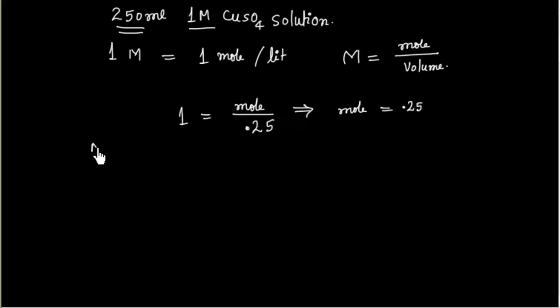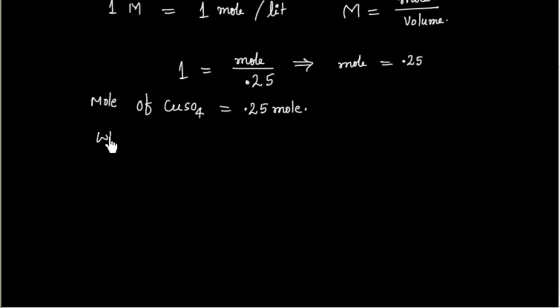Now this is mole of CuSO4 because CuSO4 in this case is solute is equal to 0.25. So what is the weight of CuSO4? So weight of CuSO4 will be 0.25 multiplied by molecular weight of CuSO4 that is 63.5 plus 32 plus 4 into 16.